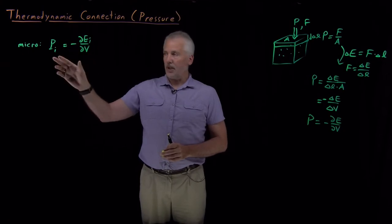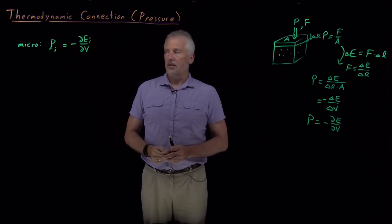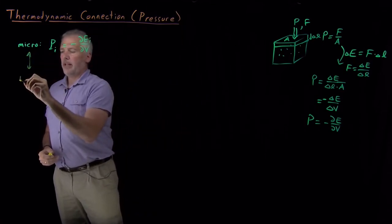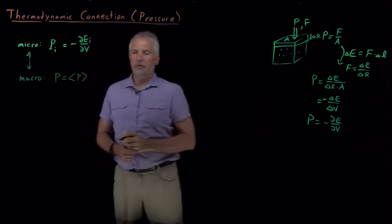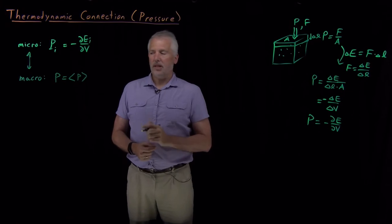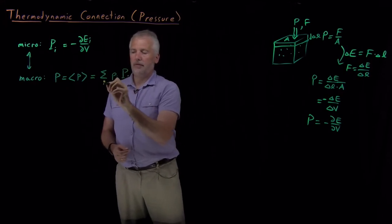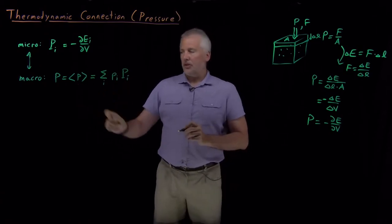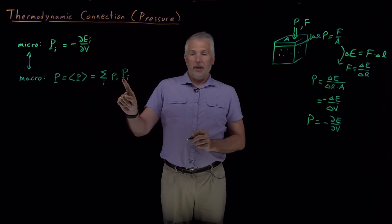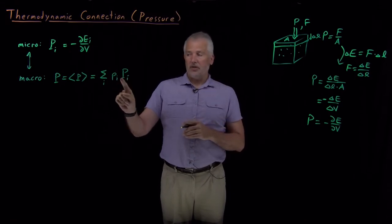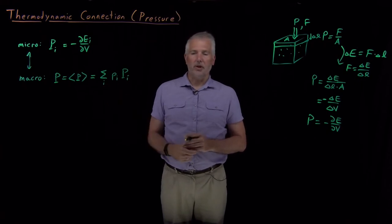Microscopically, at the level of individual quantum energy levels, the pressure of an individual state is the derivative of the energy of that state as we change the volume of the system. We need to connect that to the macroscopic definition. Macroscopically, the pressure is the average of all the pressures of all the individual microscopic states, weighted by their Boltzmann probabilities. The average pressure is the sum of the probabilities multiplied by the pressures, summed over all states the system can occupy.